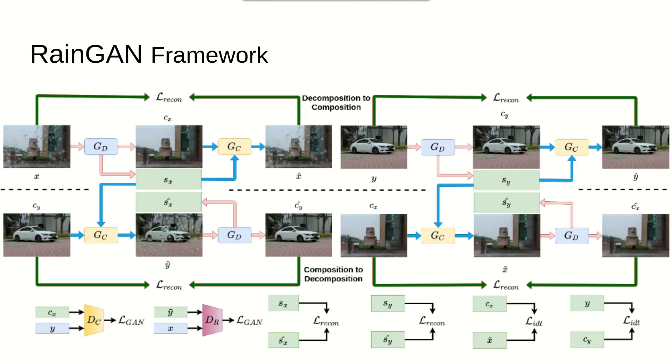Coming to the composition-to-decomposition pipeline, the rain drop style extracted previously is composed with the other translated clean image. As a result, the rain drop style is transferred from one to the other. Again, adversarial loss is applied to the composed rain drop image. The objective of this pipeline is to augment the rain drop image with different permutations of rain drop style and clean image. Then, they are used to train the decomposition generator in a paired setting.